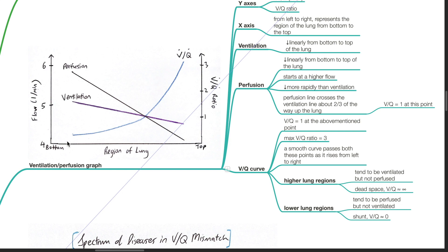The VQ curve is plotted such that the VQ ratio equals 1 at the above-mentioned crossover point, with a maximum VQ ratio of 3, and a smooth curve passes through both these points as it rises from left to right. Higher lung regions tend to be ventilated but not perfused — i.e., dead space. Lower lung regions tend to be perfused but not ventilated — i.e., shunt.